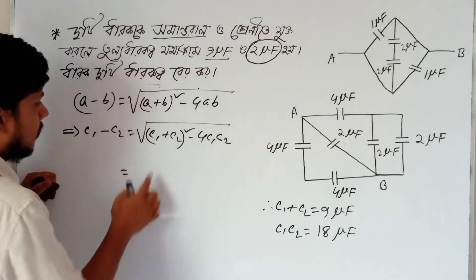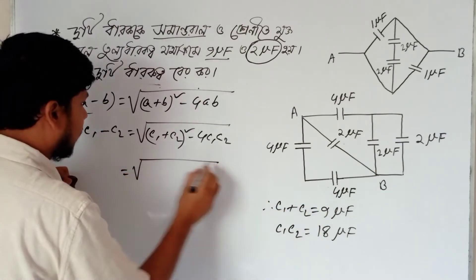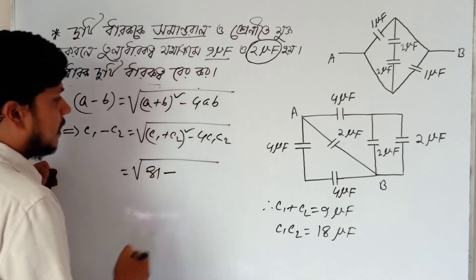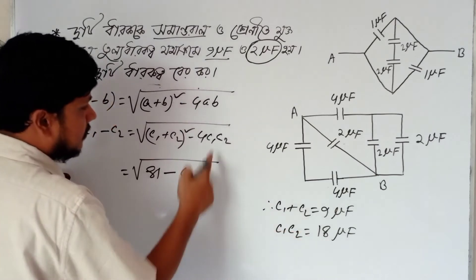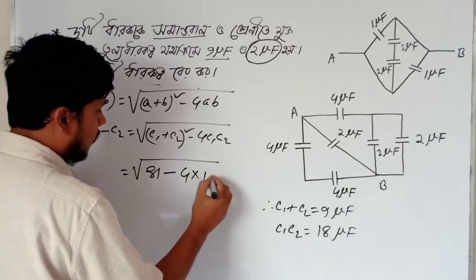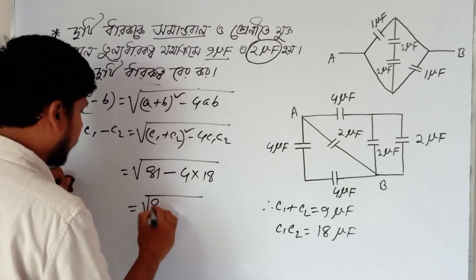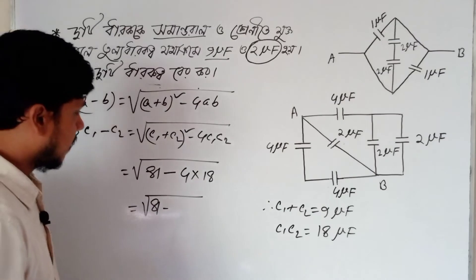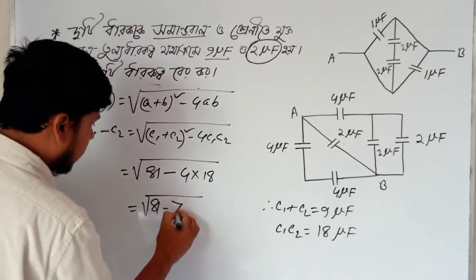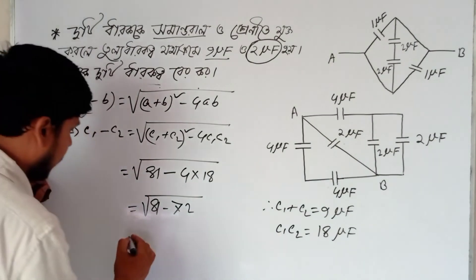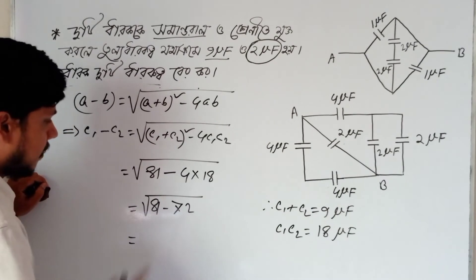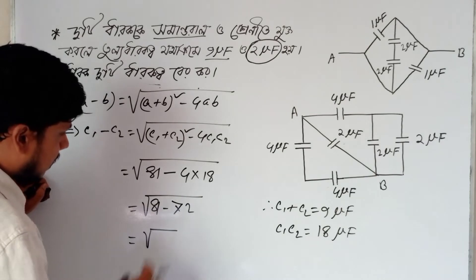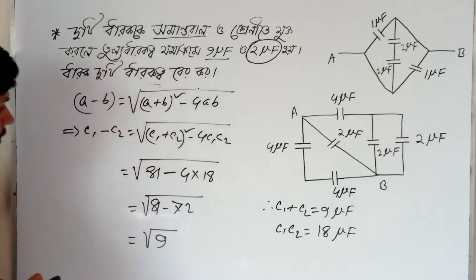Let us check: C1 plus C2 equals 9, and 9 squared equals 81. Then minus 4 times C1 times C2 equals minus 4 times 18. So we get root over 81 minus 4 into 18, which gives root over 81 minus 72. That equals root over 9.